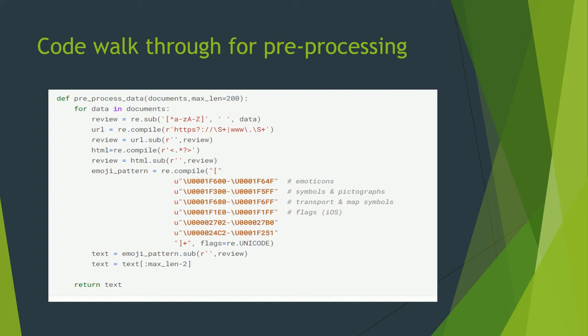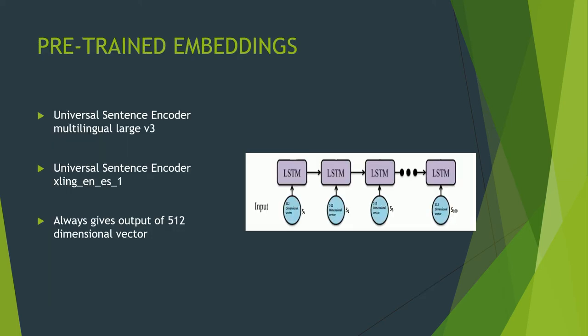This is the code walkthrough for preprocessing. We provide our text and set max length as 200 by default. First, we remove everything except small a to z and capital A to Z. After that, we remove URLs, then HTML tags, and ultimately remove emoticons or emojis. Finally, we get our preprocessed text.